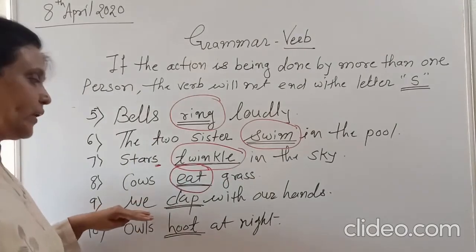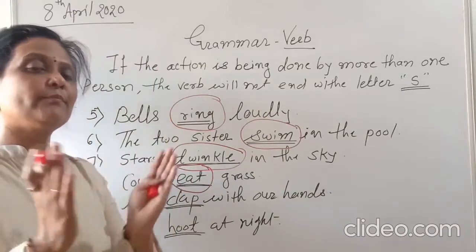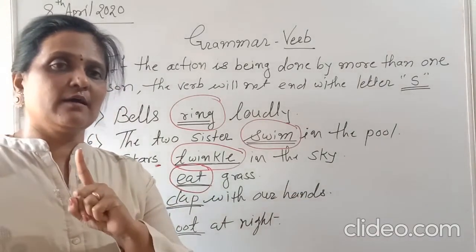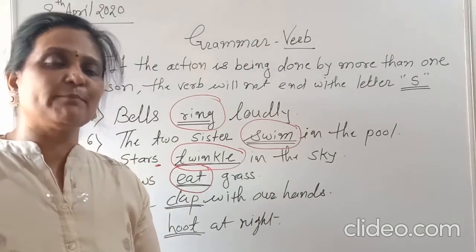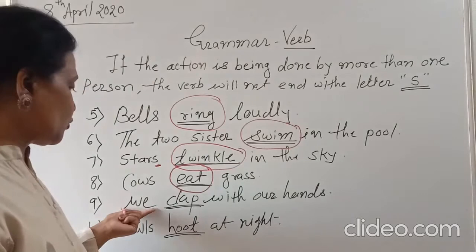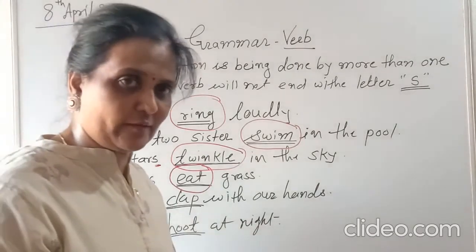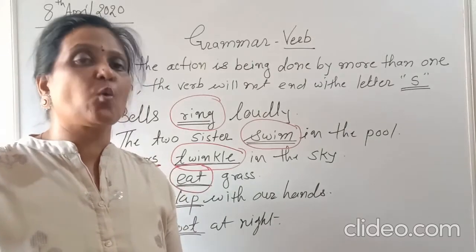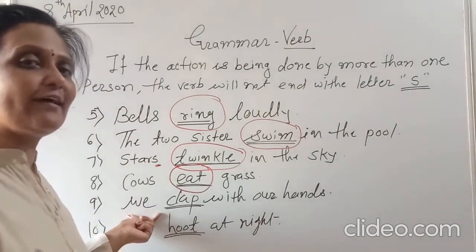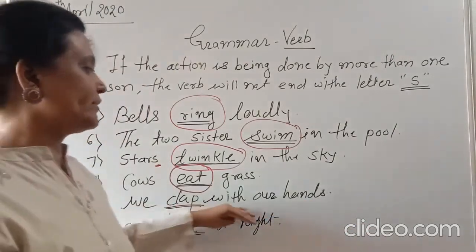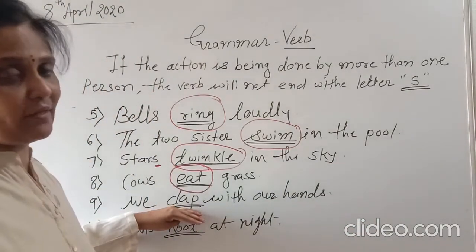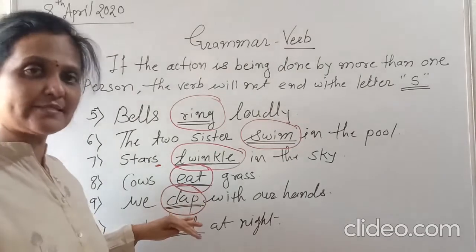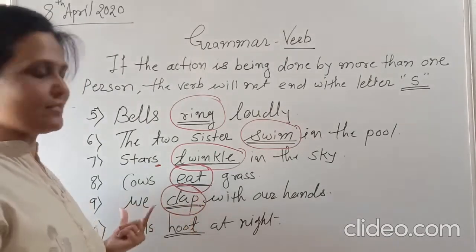Ninth: We clap with our hands. We clap with our hands. 'We' is a pronoun — it is a plural pronoun. For one person I use 'I' or 'you', but for more than one person we use 'we'. So 'we' means here are more than one person. We clap with our hands. What action are we doing? We are clapping with our hands. Clap is the action word. Clap is the action word — we cannot use 's' here.